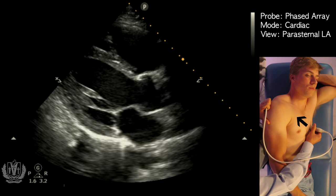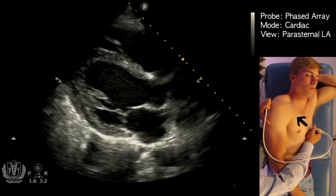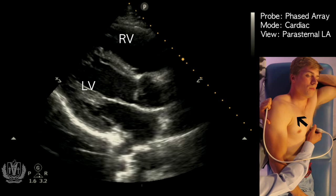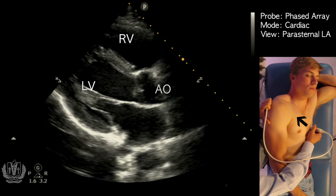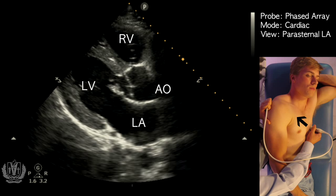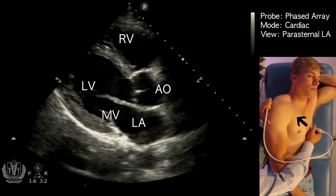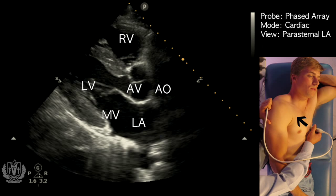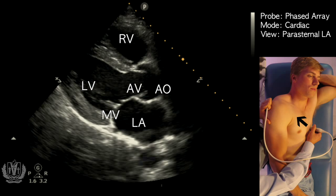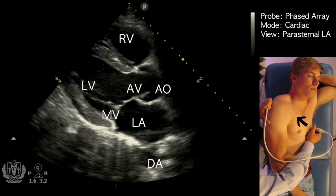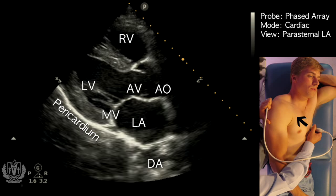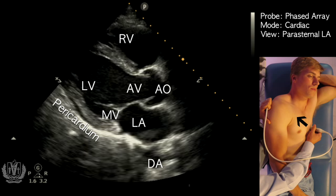The key structures to identify in the parasternal long axis view are the left ventricle, right ventricle, aortic outflow tract, and left atrium. The valves you can see are the mitral valve and the aortic valve. The appropriate depth for this scan is when you can see the descending aorta, which we see in this view here. You also want to look for the pericardium, which is the hyperechoic area in the posterior portion of the heart.